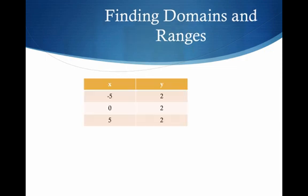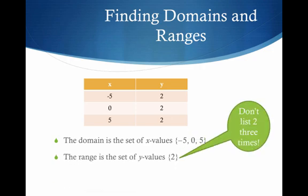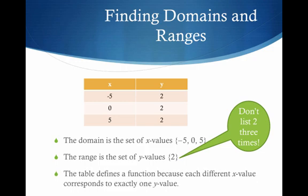What's our domain here? Negative 5, 0, and 5 are the x components. Our range is 2. Note I'm only listing the 2 once — I don't list 2, 2, 2, 2. And then is this a function? Sure it is, because each x goes to exactly one y. It doesn't matter that they all go to 2.